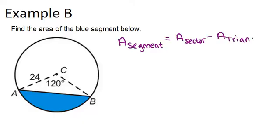So, we need to figure out two different pieces first, the sector and the triangle, and subtract them to find the area of the segment. So, to figure out the area of the sector, we want to do pi r squared times the central angle divided by 360.